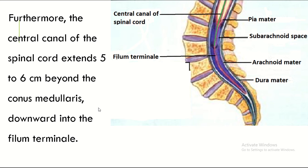Furthermore, the central canal of the spinal cord extends 5 to 6 cm beyond the conus medullaris downward into the filum terminale.